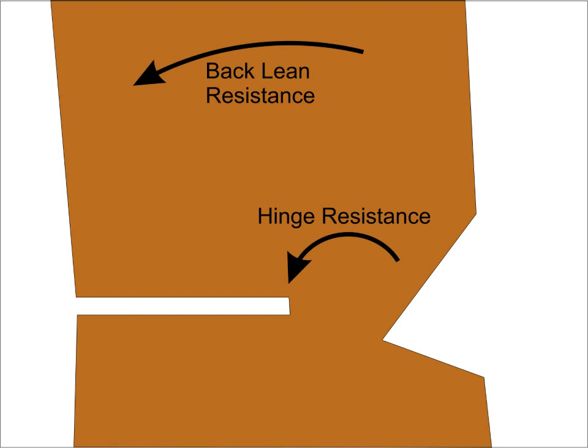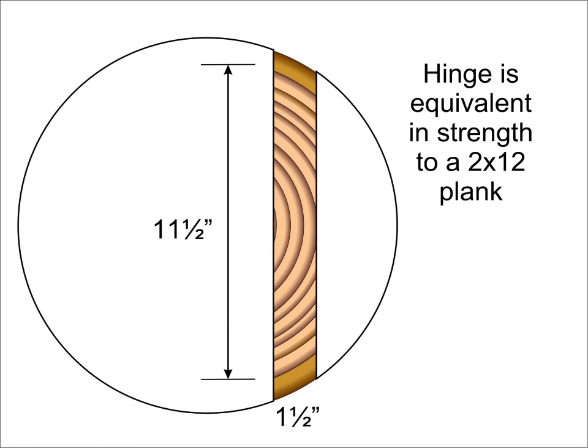To pull the tree over, we will have to exert a significant additional moment to break the hinge. For our theoretical tree, let's assume the hinge is 11.5 inches wide and 1.5 inches thick. Breaking this hinge will be equivalent to breaking a typical 2 by 12 piece of lumber. Note that many hardwood trees are stronger than the coniferous trees that most structural lumber is made from.